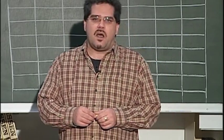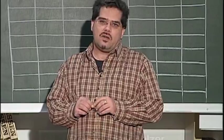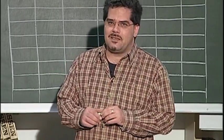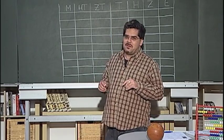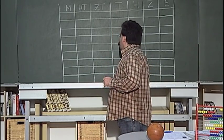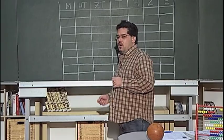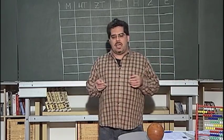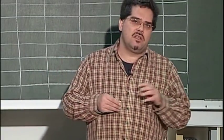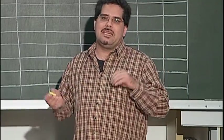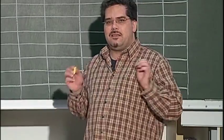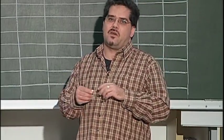Neben den Zahlennachbarn und den Zahlengeschwistern sollte man auch ein Verständnis dafür entwickeln, was Zahlen in unserem Dezimalsystem überhaupt bedeuten. Das heißt, man muss eine Zahl – zum Beispiel eine vierstellige Zahl, 4337 – zerlegen können in die Tausenderzahl, in die Hunderterzahl, in die Zehnerzahl und die Einerzahl.